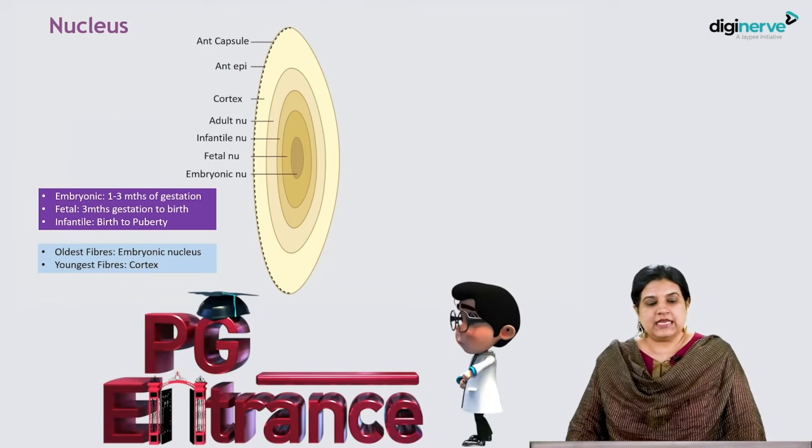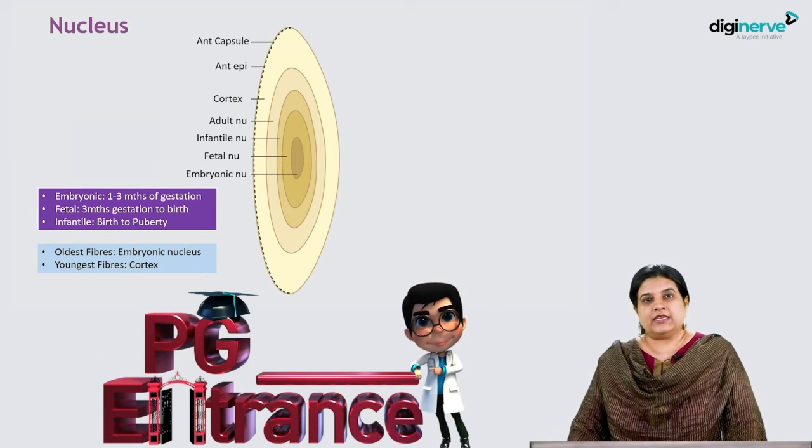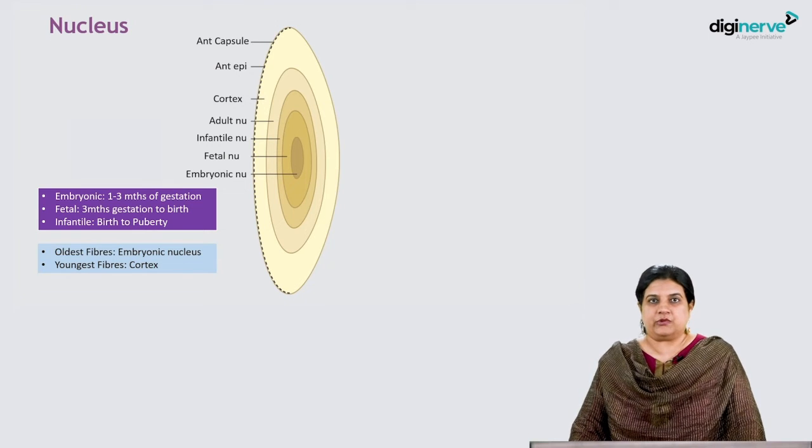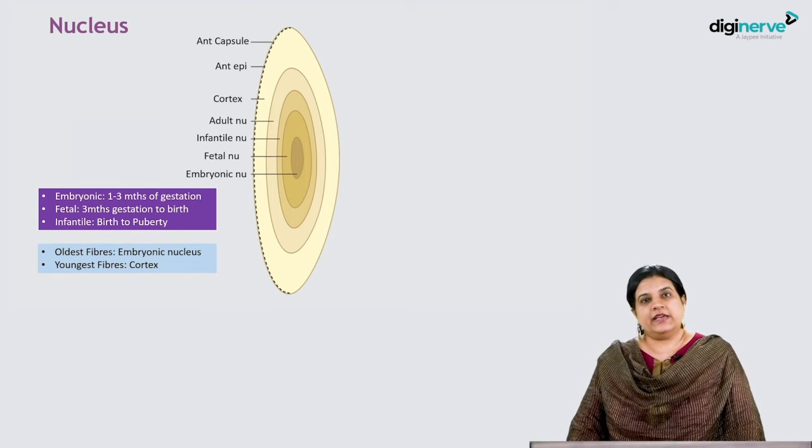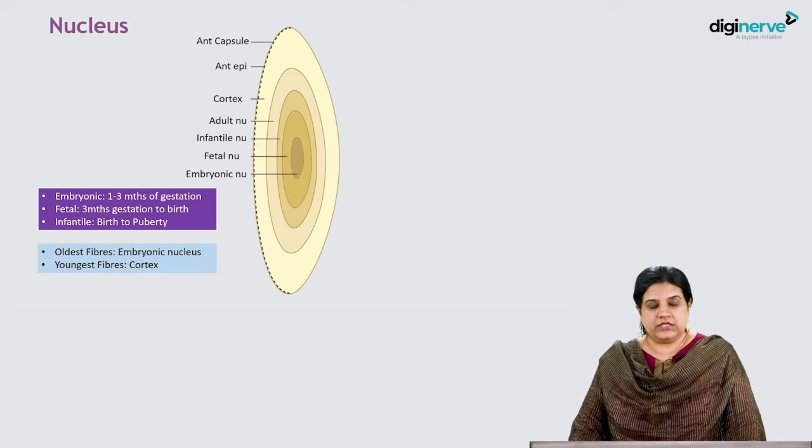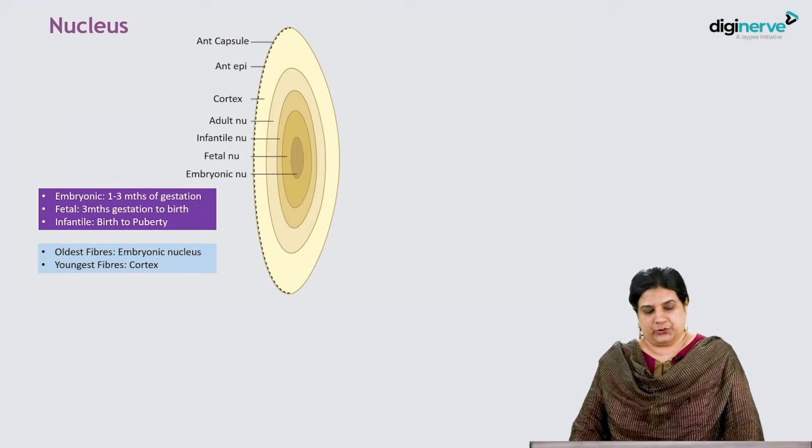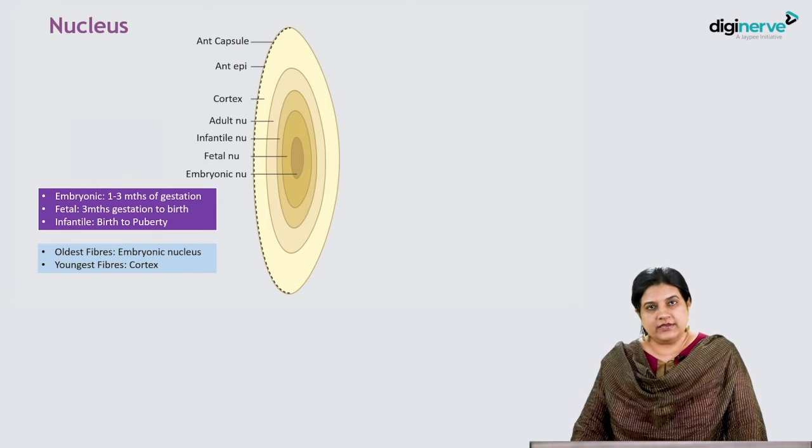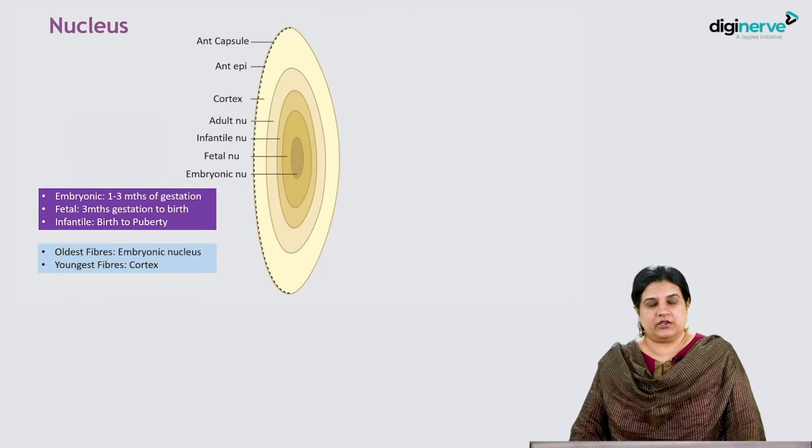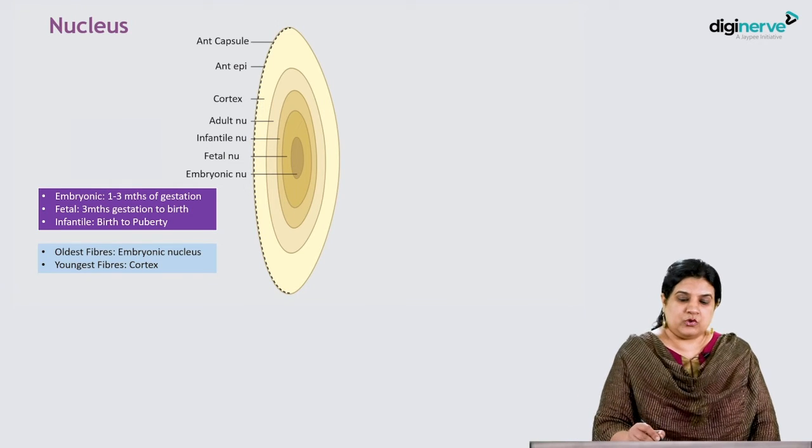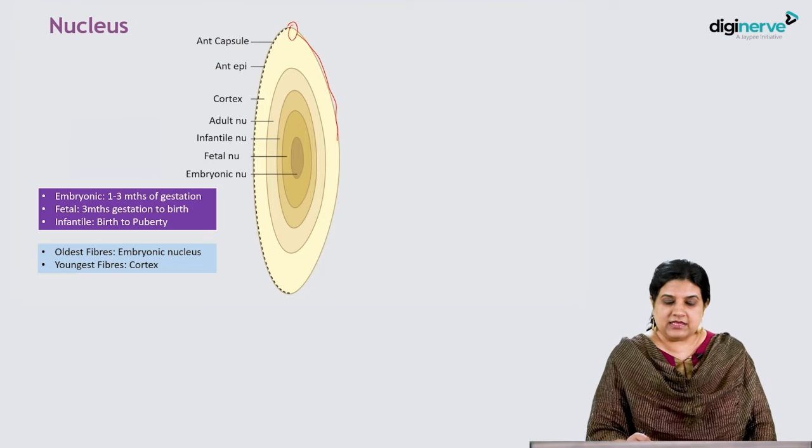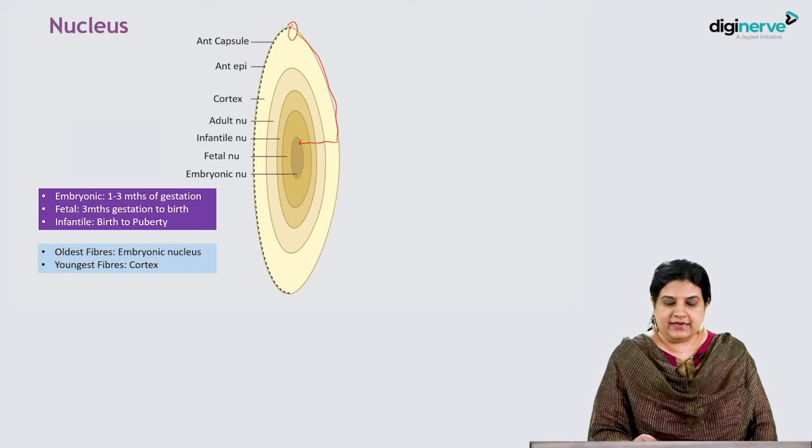The part of the eye that keeps growing throughout life is the lens. The nucleus has several layers: the embryonic nucleus forms from 1-3 months of gestation, the fetal nucleus from 3 months till birth, the infantile nucleus from birth till puberty, and then the adult nucleus. The oldest fibers are in the embryonic nucleus and the youngest fibers are in the cortex.